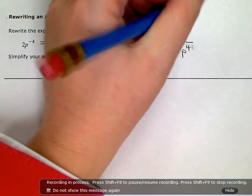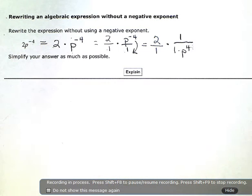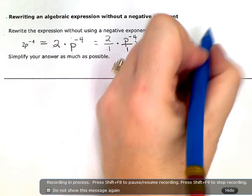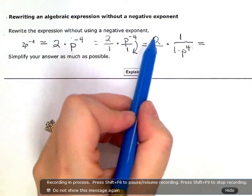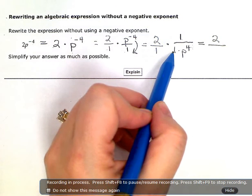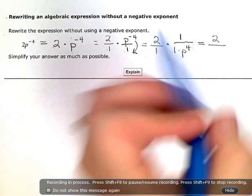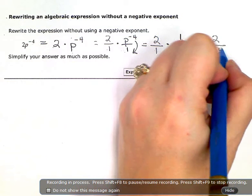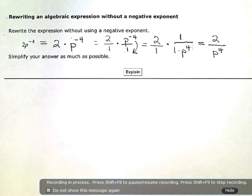Now I can just put this back together again. So 2 times 1 in the numerator is 2. 1 times 1 is 1. That's not going to affect anything. Times p to the 4th. So I have p to the positive 4 down there.